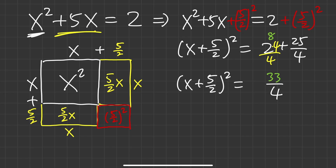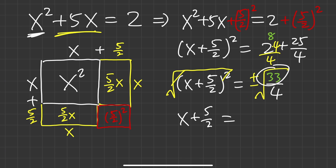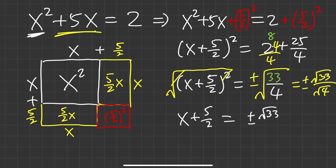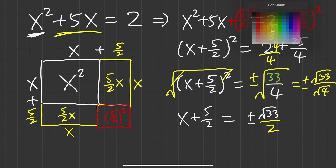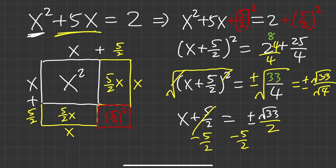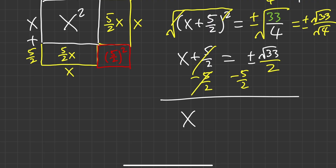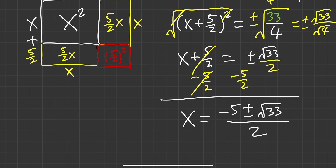The left side factors as x plus 5/2 squared equals 33/4. Take the square root of both sides — plus or minus. For the square root of a fraction, take the square root of the top and bottom separately: square root of 33 stays as is, and square root of 4 is 2. Subtract 5/2 from both sides: x equals negative 5 plus or minus square root of 33, all over 2.